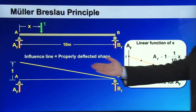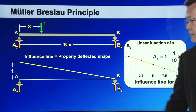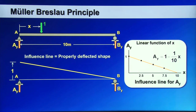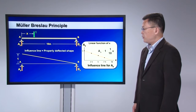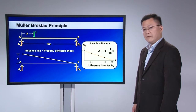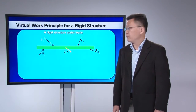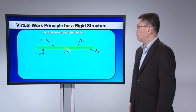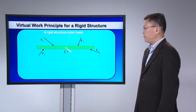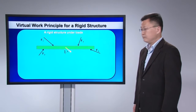So why is this deflected shape equal to the influence line? To explain this, we have to turn to the virtual work principle for a rigid body structure.